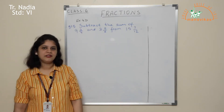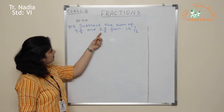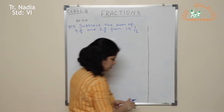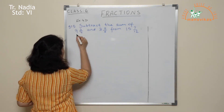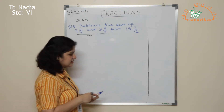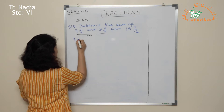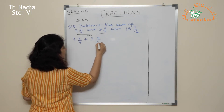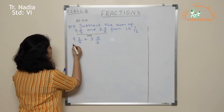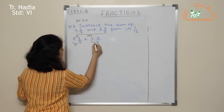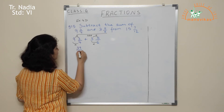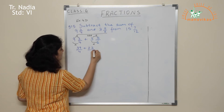Now let's go to question 15: subtract the sum of 9 and 3 upon 4 and 3 and 5 upon 6 from 15 and 7 upon 12. First I need to find the sum of the two mixed fractions, since the word 'sum' means add. So let us first add 9 and 3 upon 4 plus 3 and 5 upon 6. They are mixed numbers, so before operating we must always convert them to improper fractions.